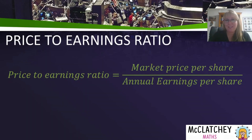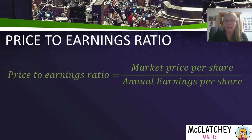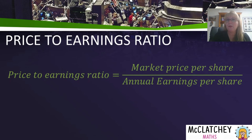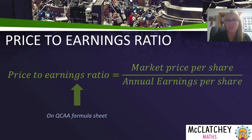Our final measurement today is the price to earnings ratio. Investors look at a range of different measurements to compare companies, and this is another one. It's the market price per share — not the starting price, but the current market price — divided by the annual earnings per share, which is the profit the company makes divided by the total number of shares. This formula is also on your QCAA formula sheet. Note that annual earnings per share may be given to you, or it may be something you'll need to calculate.